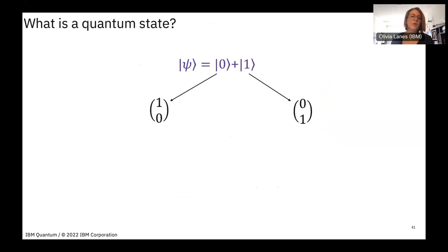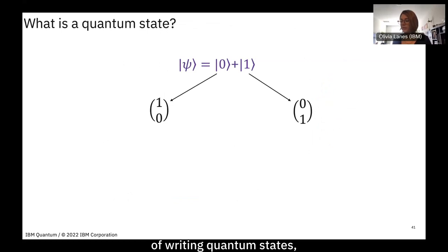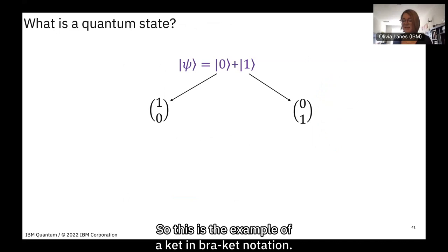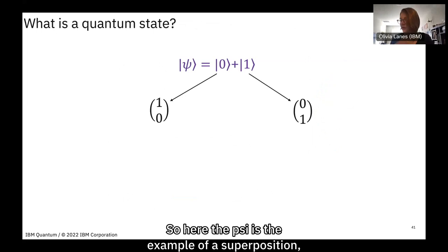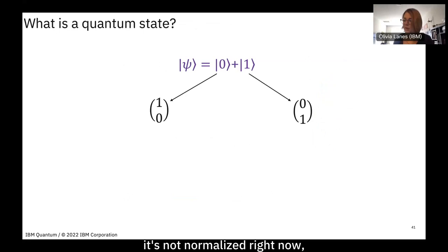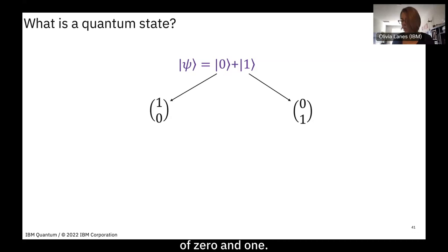Now let's dig deeper into quantum states and Dirac notation. Dirac notation is the shorthand way of writing quantum states, which are vectors in the Hilbert space. This is an example of a ket in bra-ket notation. The zero state can be written as a column vector of (1, 0) and the one ket as a column vector of (0, 1).